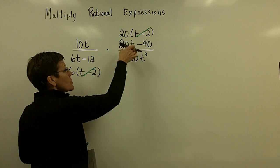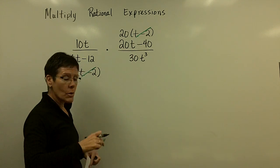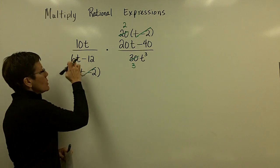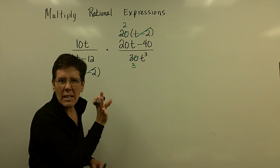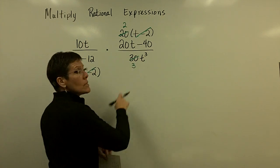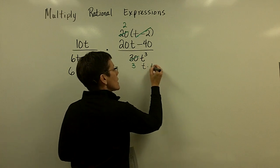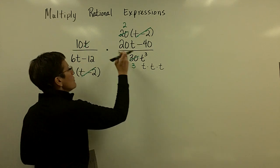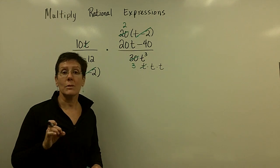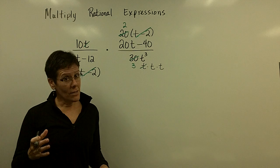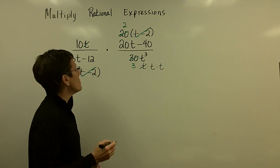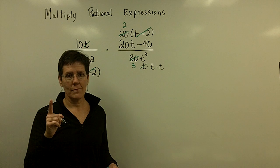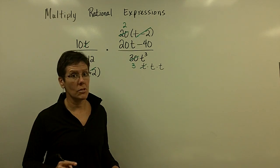You could then reduce the 20 over 30 — 10 goes into each of those, so 10 goes into here twice and into there 3 times. You could reduce the 2s, but let's say I didn't notice. And I can deal with the t and t cubed: t cubed is t times t times t. When I remove one t on top and on the bottom, I'm left with t squared downstairs. When dividing monomials with like bases, you subtract the exponents — t to the first over t to the third gives t to the negative 2 upstairs, which becomes t squared in the denominator.